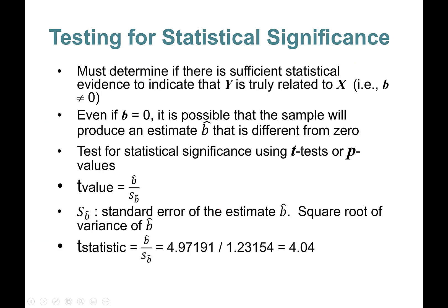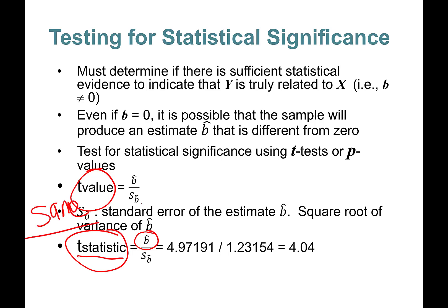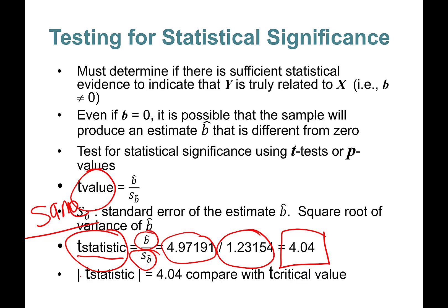The t-statistic and t-value are the same thing. Beta-hat divided by the standard error from the regression output gives us 4.04. We are not done — we have to find the absolute value of this t-statistic. Absolute value means if you see a negative sign, turn it into a positive: for example, the absolute value of negative 3 is 3.